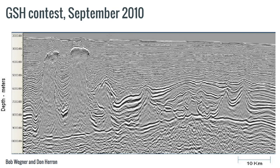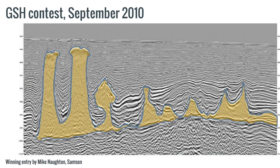There have been some other experiments along these lines. Don Heron and Bob Wagner in Houston and the GSH ran some experiments about five years ago where they challenged people to, for example, interpret the salt in this picture. The winning one looked like this, by Mike Norton at Samson — he won several of their contests, I believe. Really interesting experiment, but they only published the winning response. With these things, I think it's kind of interesting if you get to see what everybody did.